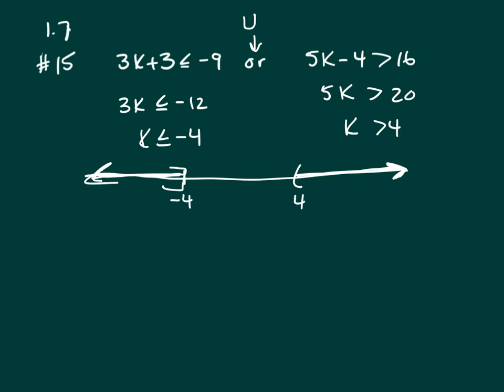Interval notation is always written left to right. If you look at this left piece, it starts at negative infinity—you always have a parenthesis on infinity—and it goes up to negative 4 where it stops with the bracket. Union, this right-hand side piece starts with 4 but does not include it and goes to positive infinity.